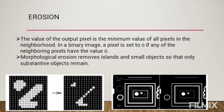Erosion: the value of the output pixel is the minimum value of all pixels in the neighborhood. In a binary image, a pixel is set to zero if any of the neighboring pixels have the value zero. Morphological erosion removes isolated small objects so that only substantive objects remain. The following figures illustrate the dilation of an image — note how the structuring element defines the neighborhood of the pixel of interest. The dilation function applies the appropriate rule to the pixels in the neighborhood and assigns a value to the corresponding pixel in the output image.